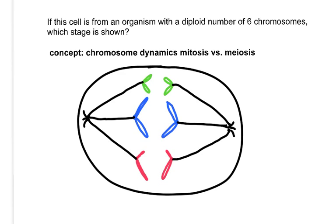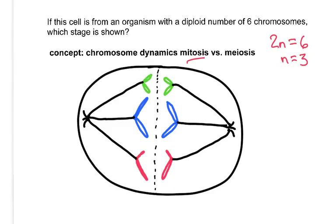Here's a final question: if a cell is from an organism with a diploid number of six chromosomes — 2n equals 6, so n equals 3 — which stage is shown? If it were mitosis, you'd see six chromosomes lining up at the plate. Instead, you only see three, and the sister chromatids on those three have separated. After cytokinesis, each cell will have three chromosomes — the haploid number — so this must be anaphase of meiosis II.